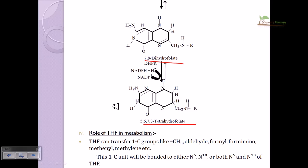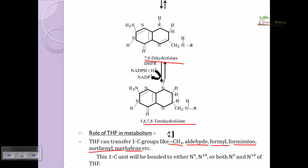The role of THF in metabolism is to transfer one-carbon groups such as CH3 (methyl), aldehyde, formyl, formimino, or methylene groups from one moiety to another. The single carbon unit is bonded to either the N5 or N10 position, or bridged across both N5 and N10 positions, which are critical for holding these chemical groups.